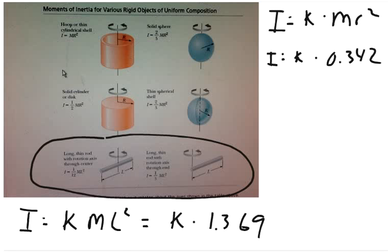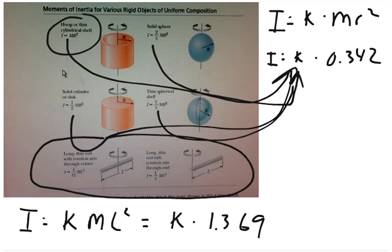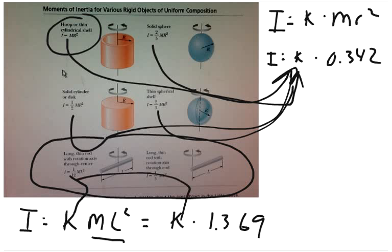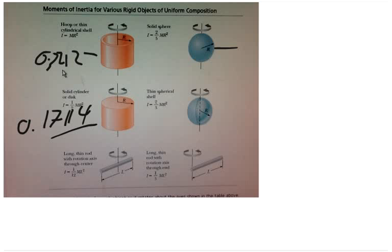Now just plug in K for each object. For the hoop, K = 1, giving I = 0.342 kg·m². For the solid cylinder, K = 1/2, giving I = 0.171 kg·m². For the solid sphere, K = 2/5, giving I = 0.137 kg·m². For the thin spherical shell, K = 2/3, giving I = 0.228 kg·m². For the rod objects, use 2R as the length and K = 1/12 or 1/3 accordingly.